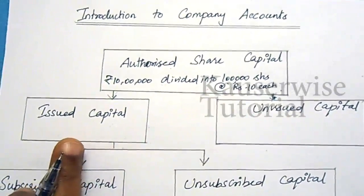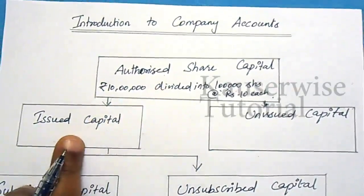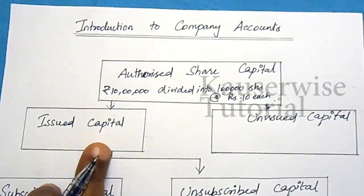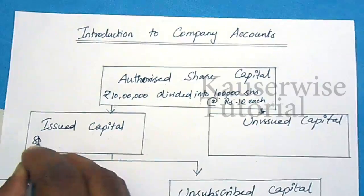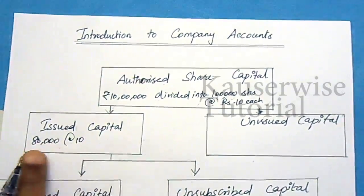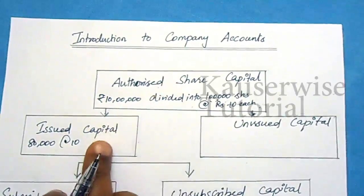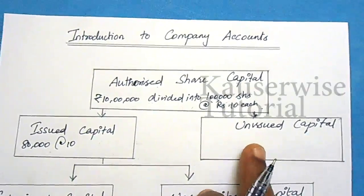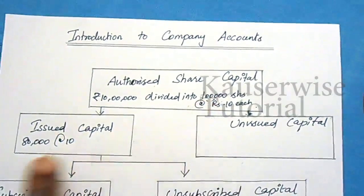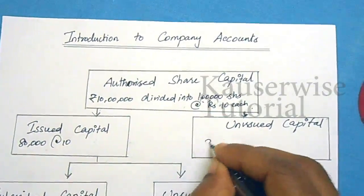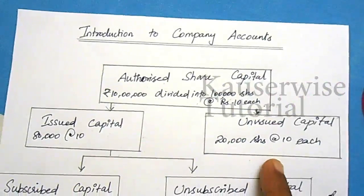Issued capital represents the part of authorized capital which is issued to the general public for subscription. For example, out of 1 lakh shares, initially the company issues 80,000 shares at rupees 10 each, raising 8 lakhs. This is called issued capital. Unissued capital is the difference between authorized shares and issued shares — the remaining 20,000 shares at rupees 10 each — which can be offered to the public at a later date.